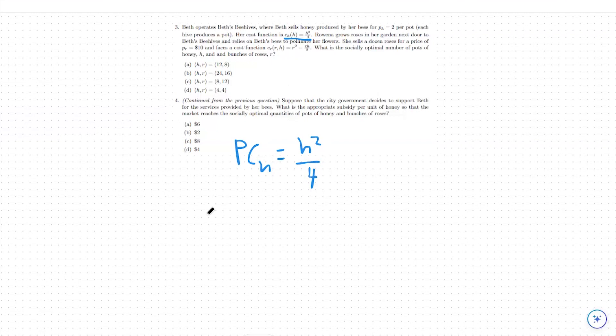Next, we can say that our marginal private cost to honey production is going to be h over 2. We're just going to take the derivative of h squared over 4, and we get h over 2. We're going to set our marginal private cost of honey equal to the marginal private benefit of honey.